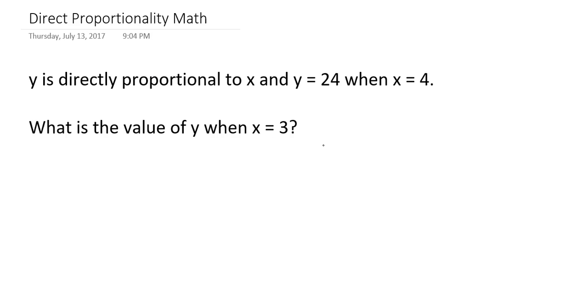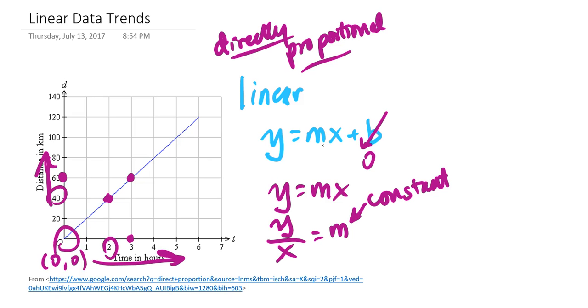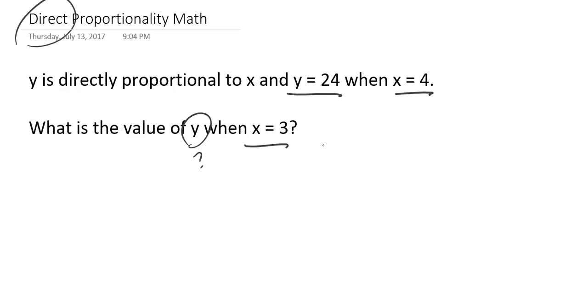So, for example, suppose that I have data that is directly proportional. Okay, and I'm able to figure out that when y equals 24, x is 4 for this set of directly proportional data. Suppose that I want to know what y is when x is equal to 3. Well, if these are directly proportional data, that means that this equation right here must apply.